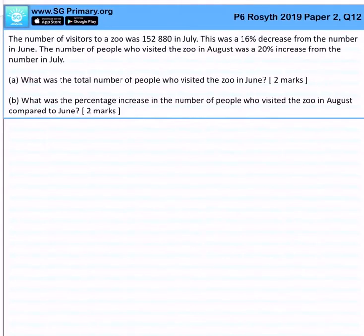The number of visitors to the zoo was 152,880 in July. This is a 16% decrease from June, and then after which in August there's another 20% increase. So what is the total number of people who visited the zoo in June?